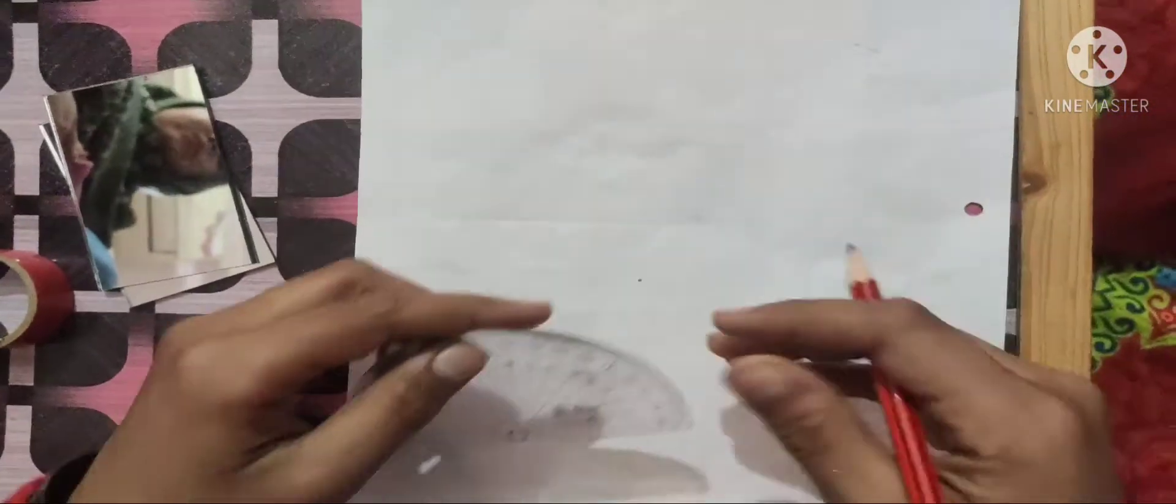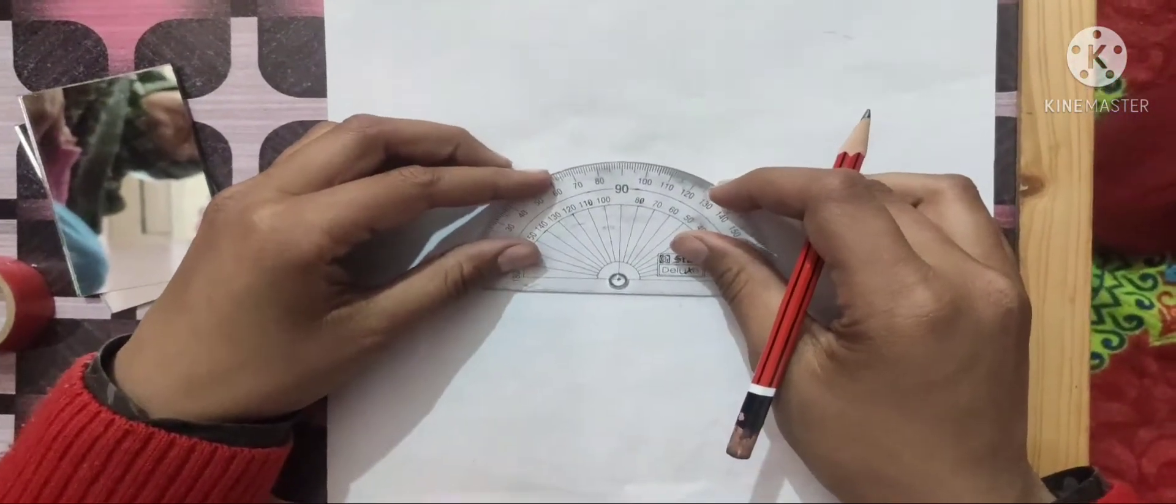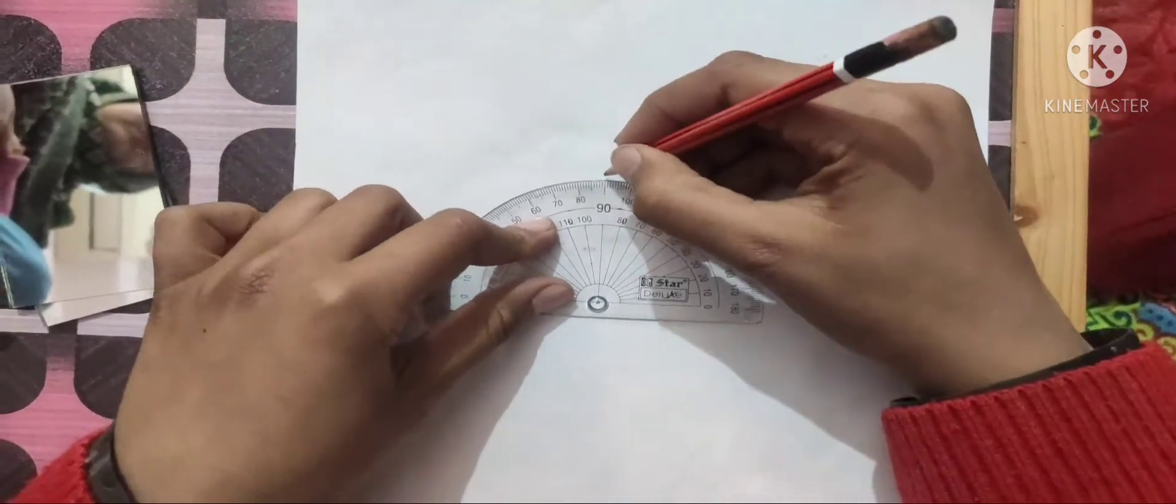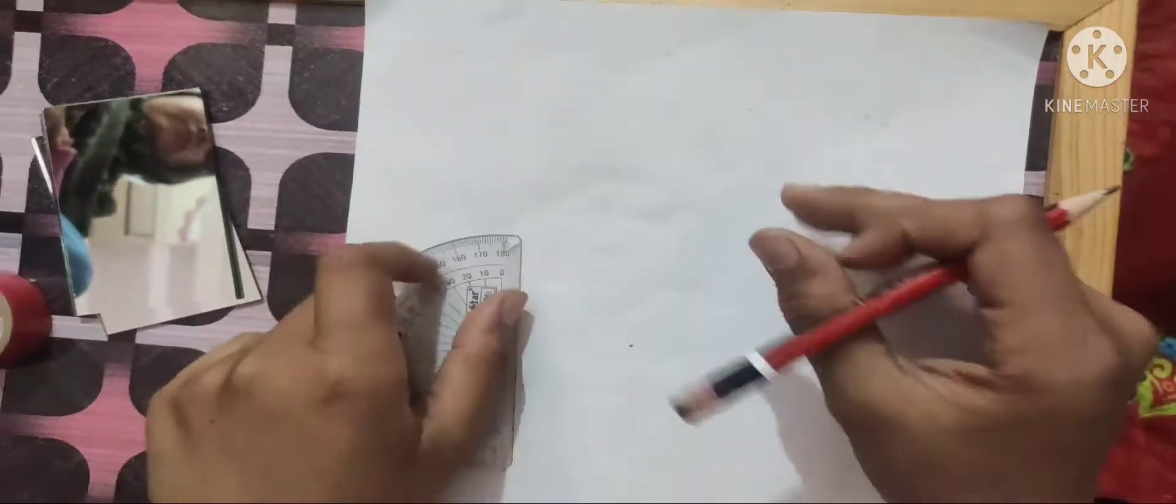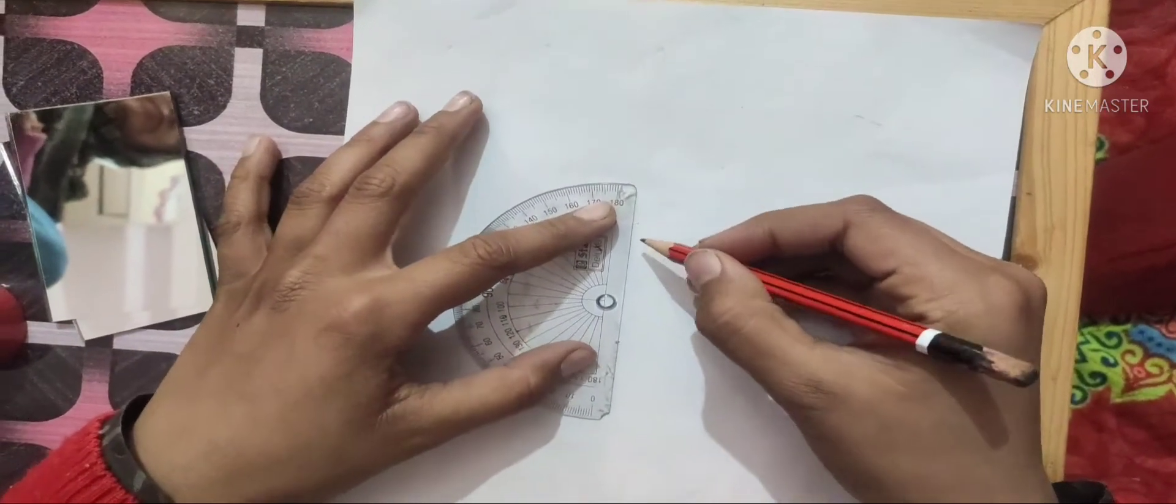First, mark a dot on a paper and put a protractor on it, make a 90 degree angle and make a line.